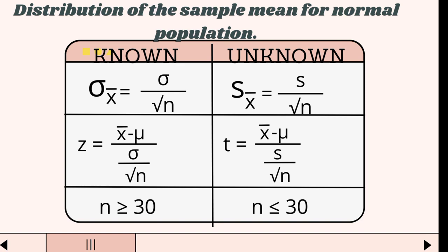Here is a table for you to know the formulas when the population variance is known and unknown. In the first row, we have the standard error formula when the population variance is known, which is sigma divided by the square root of n, and the other standard error formula is S divided by the square root of n when the population variance is unknown.